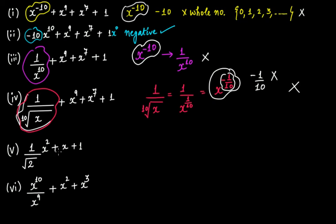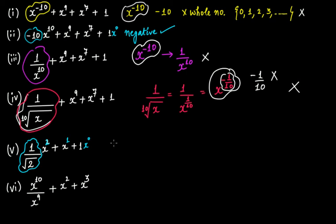Here you have 1 over the square root of 2, times x squared, plus x, plus 1. Your numerical coefficient can be any real number — it can be negative, in decimals, or integers. The only thing is that your exponents should not be negative; they should be whole numbers. Here it is x squared — whole number. It is x raised to the power of 1 — whole number. It is x raised to the power of 0 — whole number. Yes, this is a polynomial.